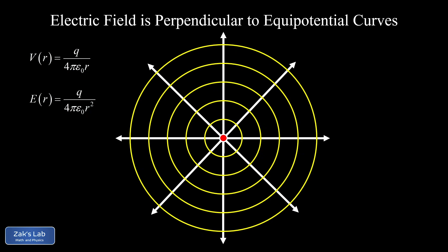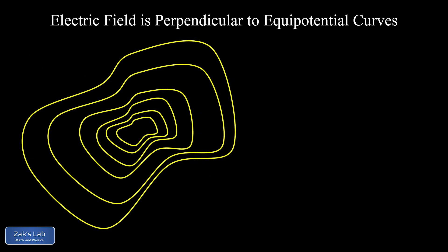Now, of course, we want to generalize this. So let's look at some arbitrary set of equipotential curves produced by some wacky distribution of charge. Now, these equipotential curves are analogous to the curves on a topographic map. Those are curves of constant elevation on a map. And recall that potential is analogous to elevation.